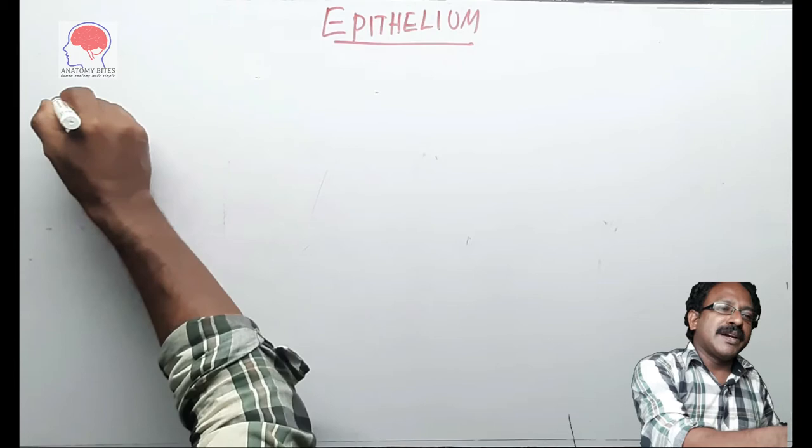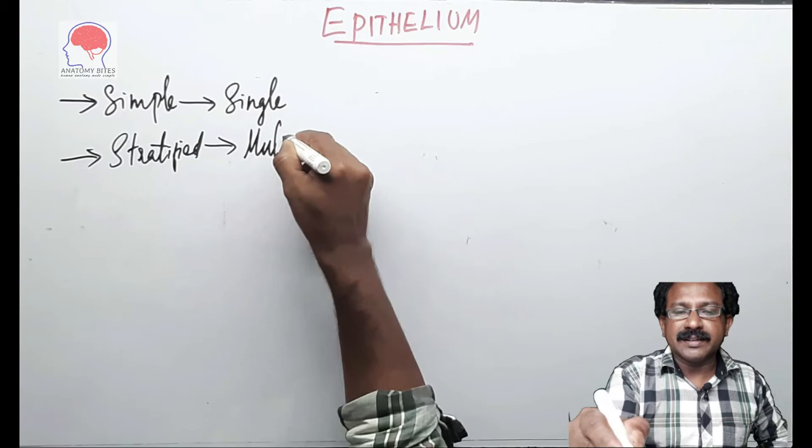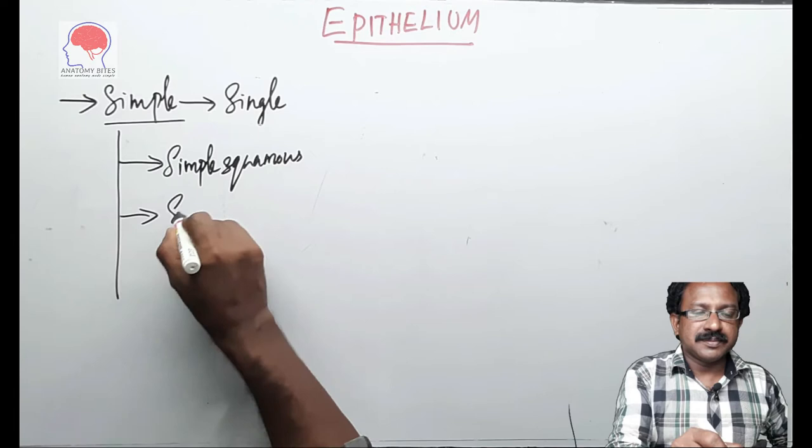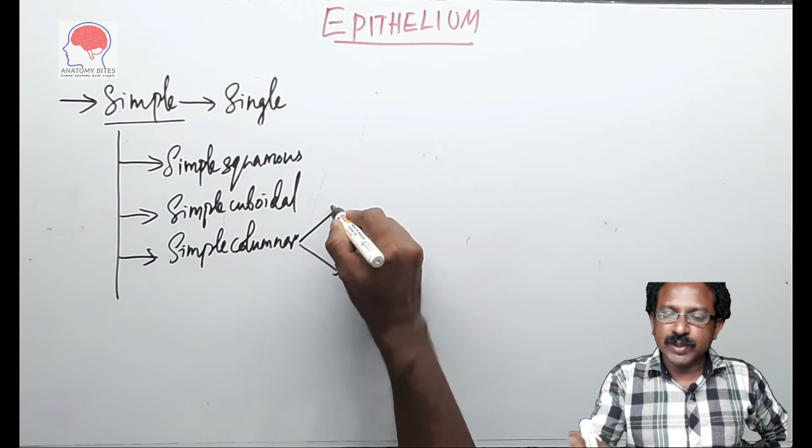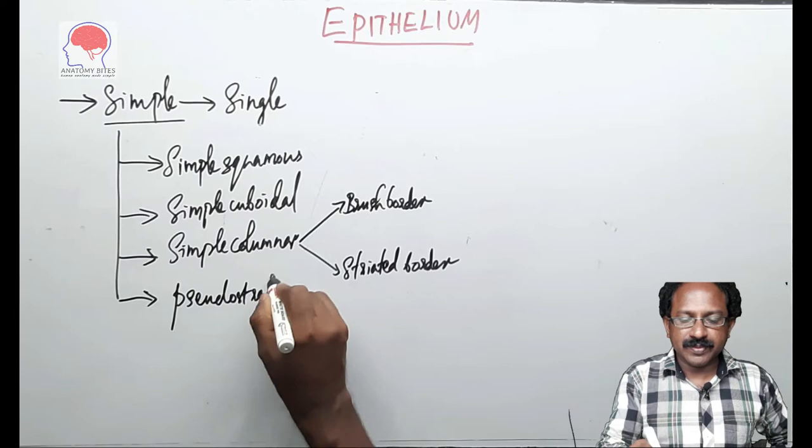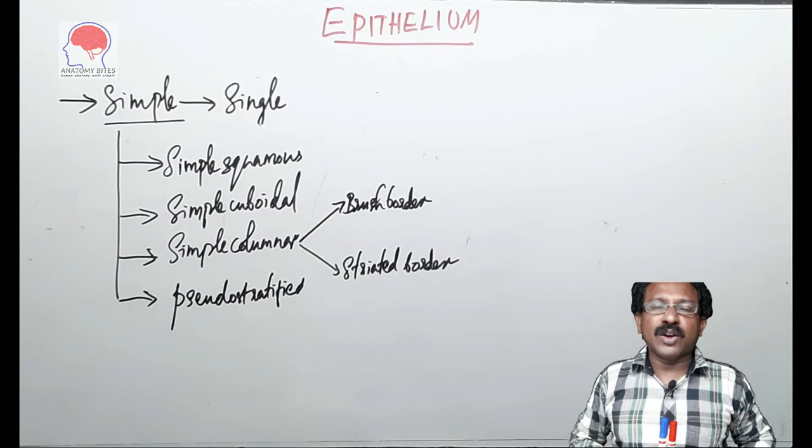Epithelium is basically classified into simple epithelium which has only one single layer of cells. Stratified epithelium means they are multi-layered. Let me take this simple epithelium. These are simple squamous, simple cuboidal, simple columnar, again subdivided into brush border and striated border, and pseudostratified. So these are the types of simple epithelium. We will see this simple epithelium one by one.